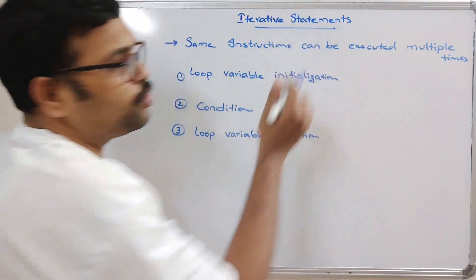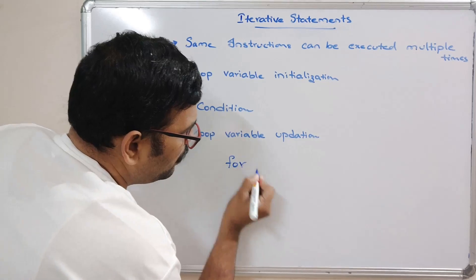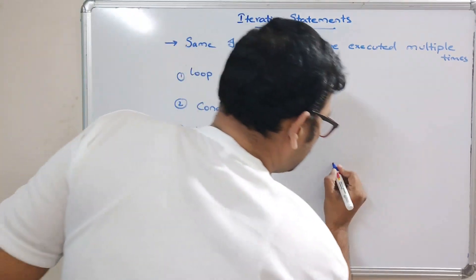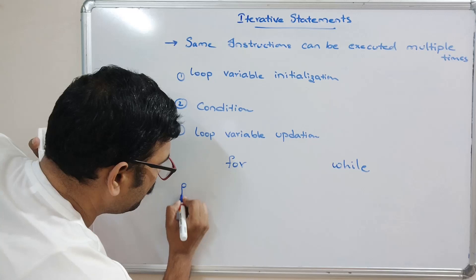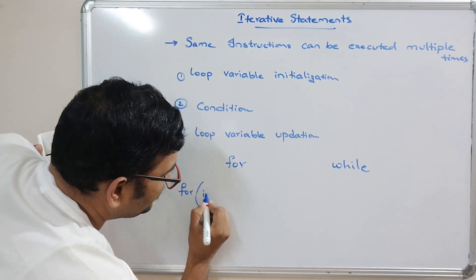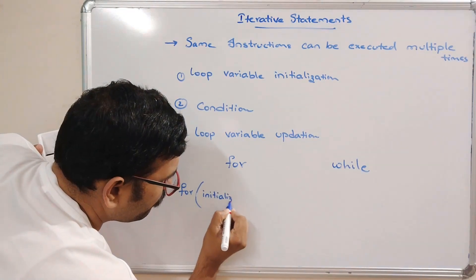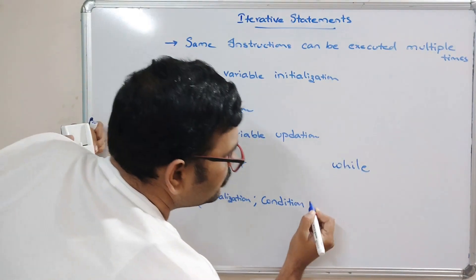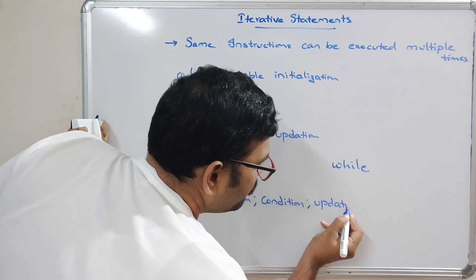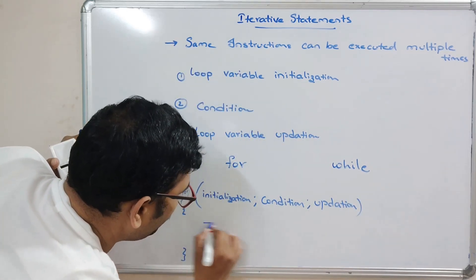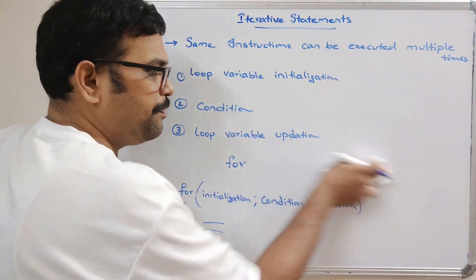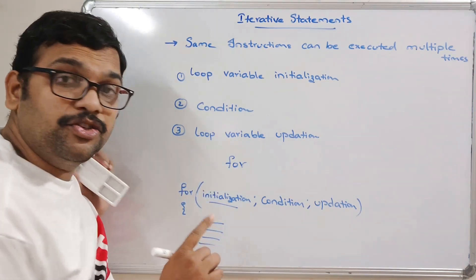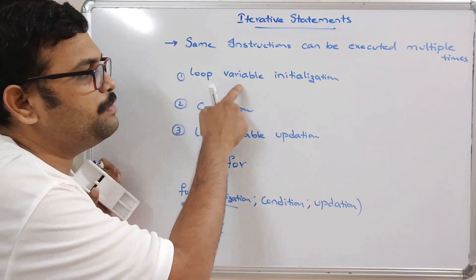There are mainly two iterative statements we use: for and while. Coming to the syntax for the for loop: we write 'for', followed by initialization, semicolon, condition, semicolon, updation, then open and close the block where we write the statements. This initialization is executed only once — in the first iteration.